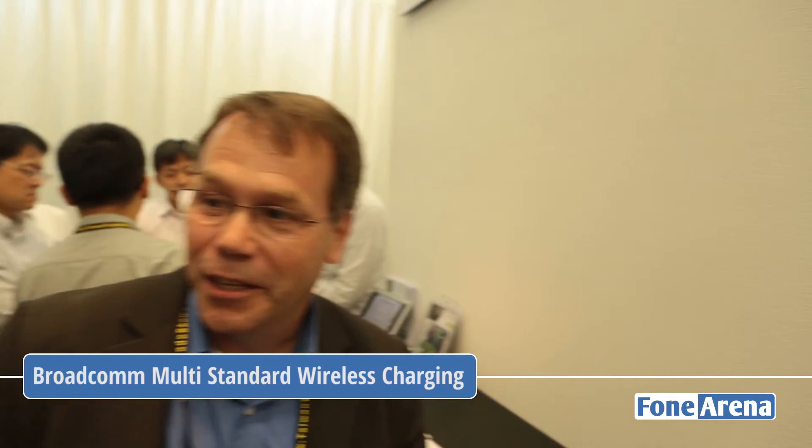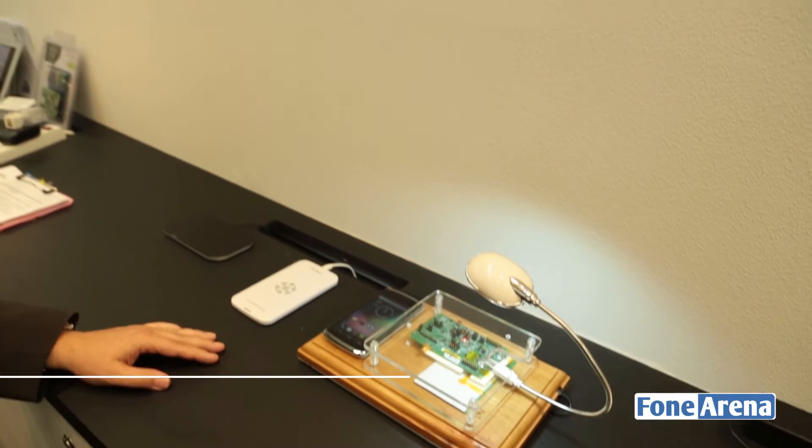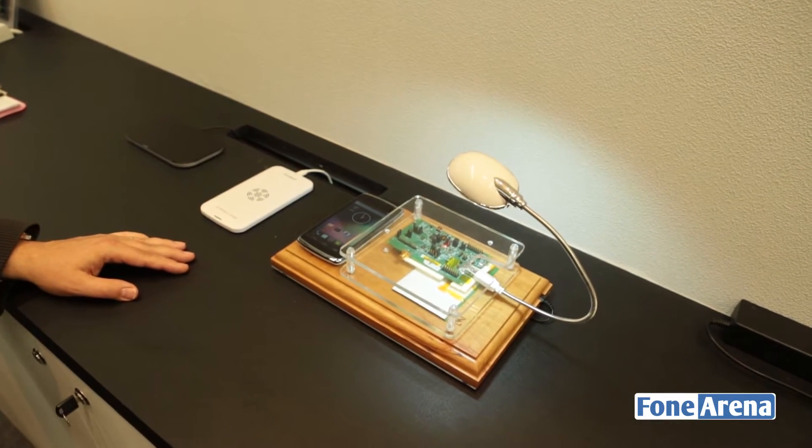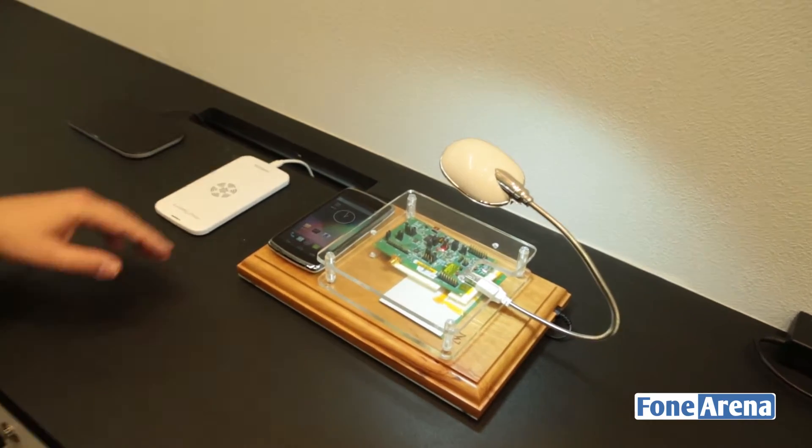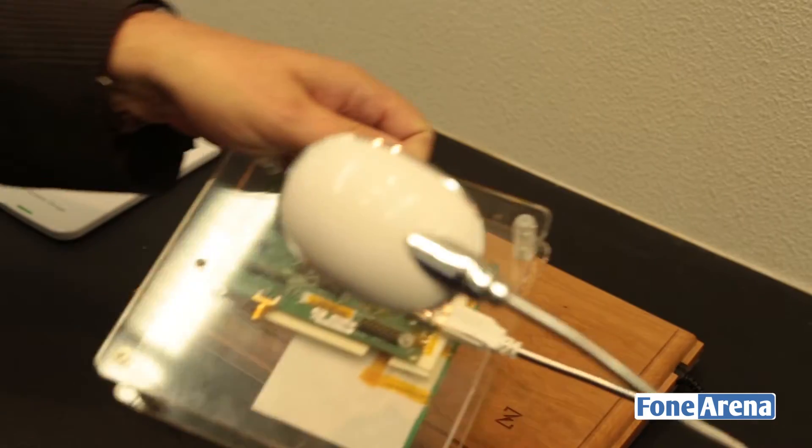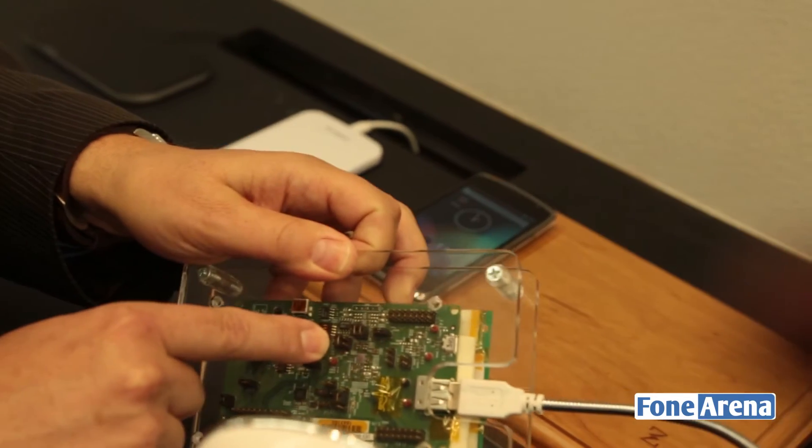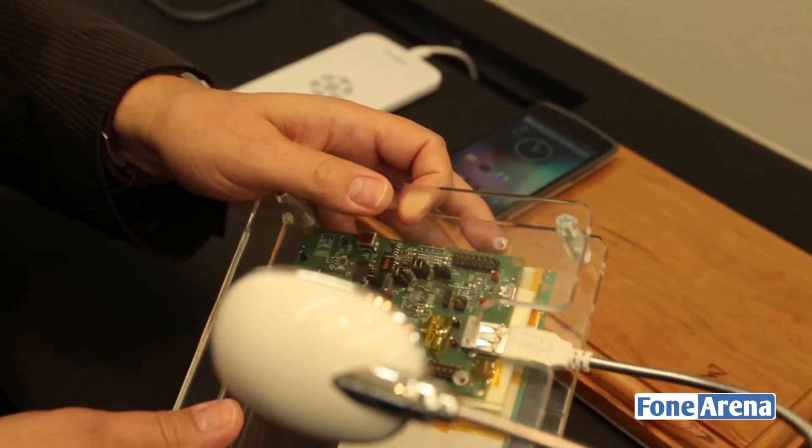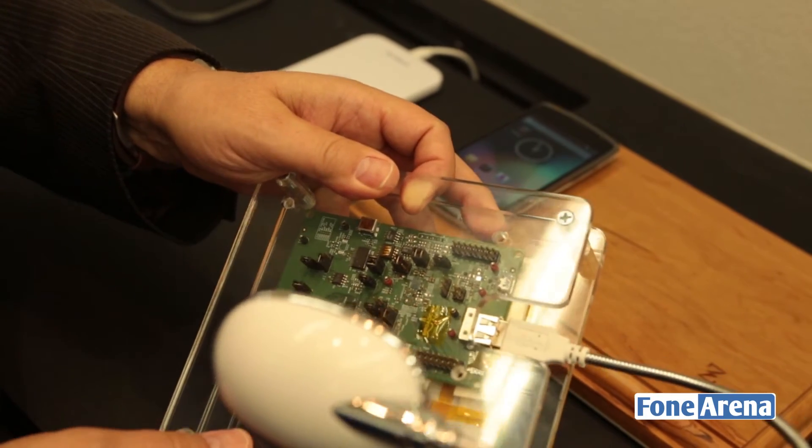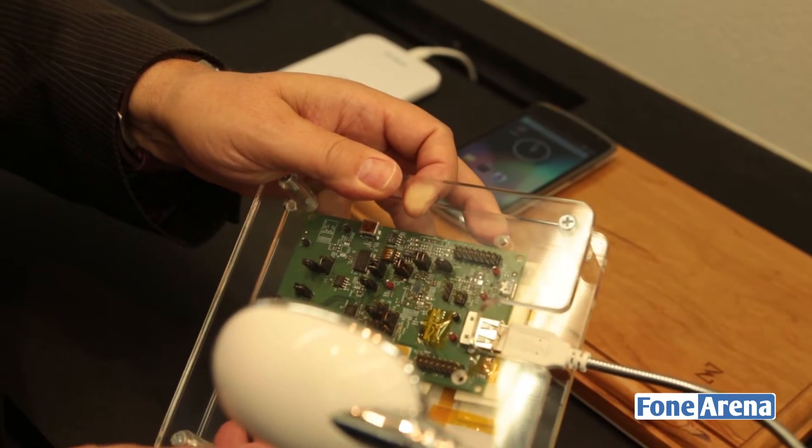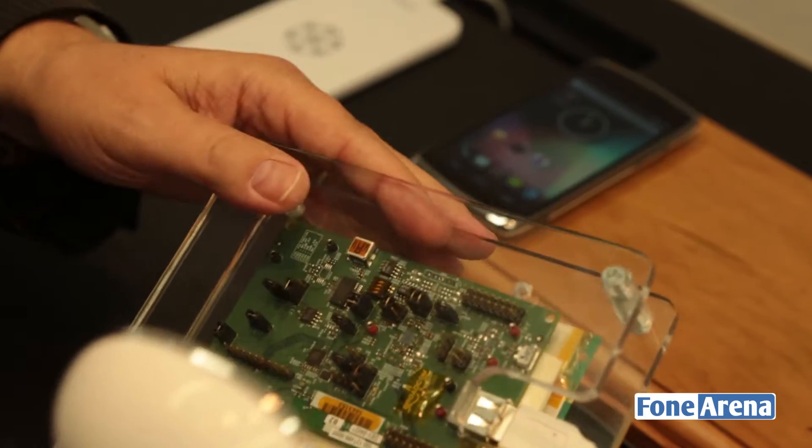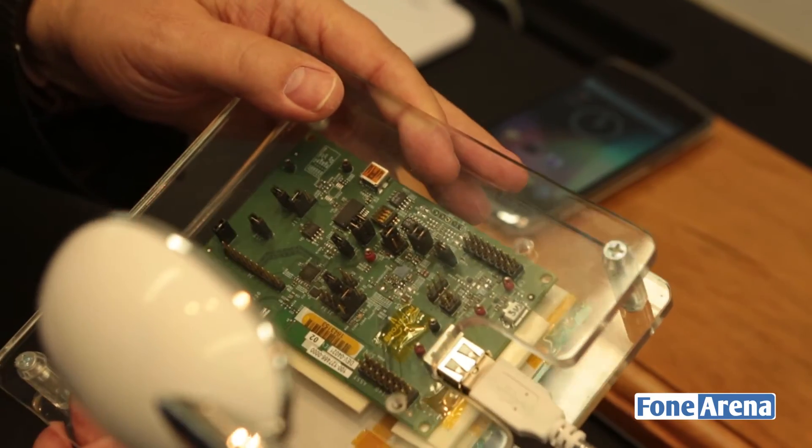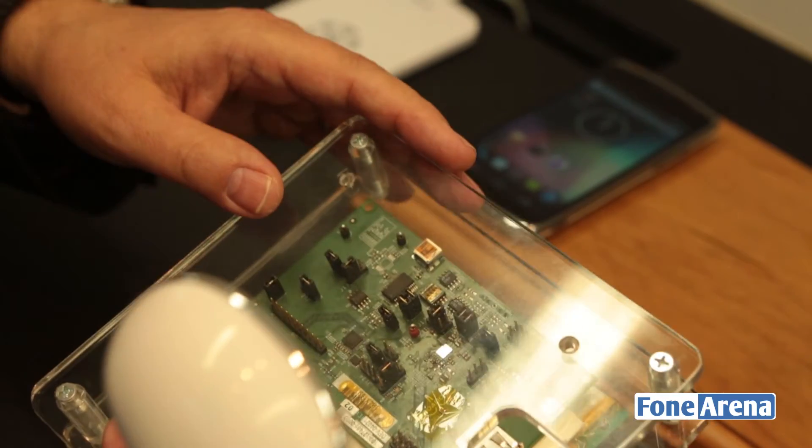What we're showing here is a new product that we introduced one week ago. We had a press release announcing a chip that is showing here. It's the shiny part here on this PCB. It's a wireless power receiving chip that can actually work with all existing standards. So it will detect which standard it's placed on and automatically switch to the right mode.